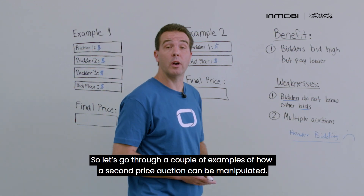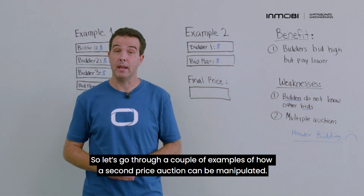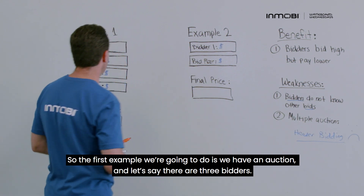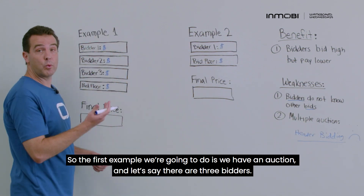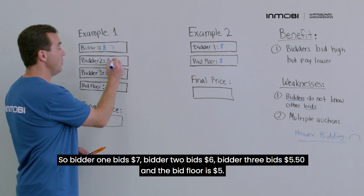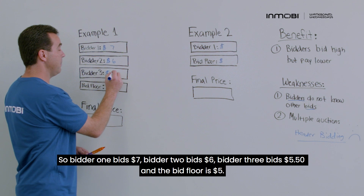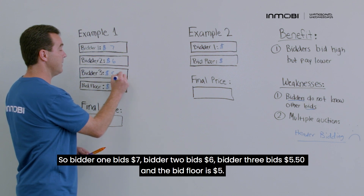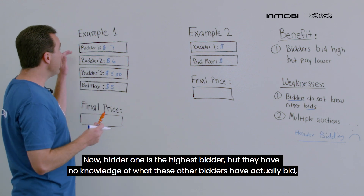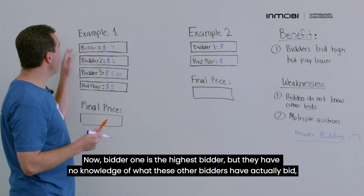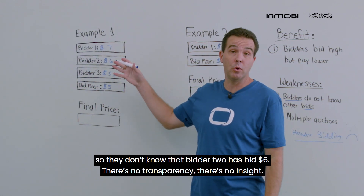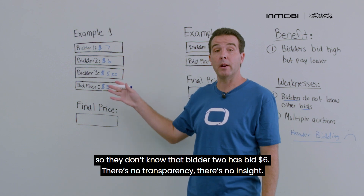Let's go through a couple of examples of how a second price auction can be manipulated. In the first example, there are three bidders: bidder one bids $7, bidder two bids $6, bidder three bids $5.50, and the bid floor is $5. Bidder one is the highest bidder, but they have no knowledge of what the other bidders have actually bid — they don't know that bidder two bid $6. There's no transparency, no insight.